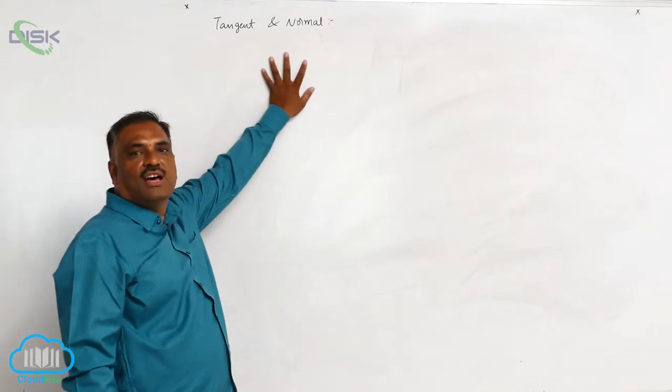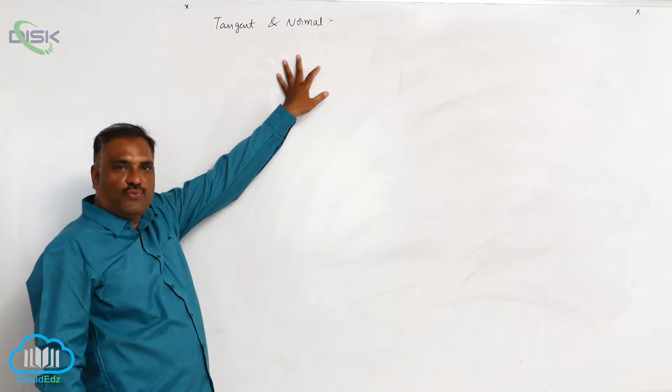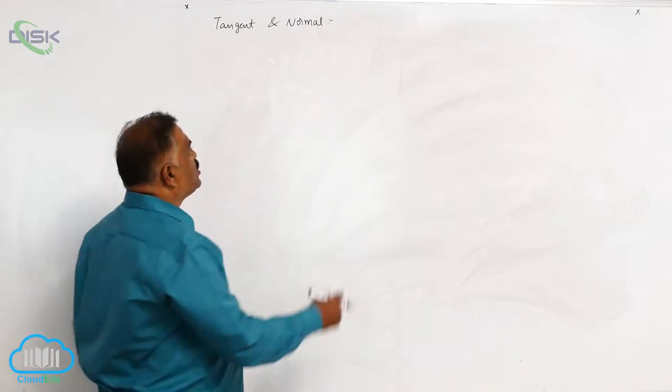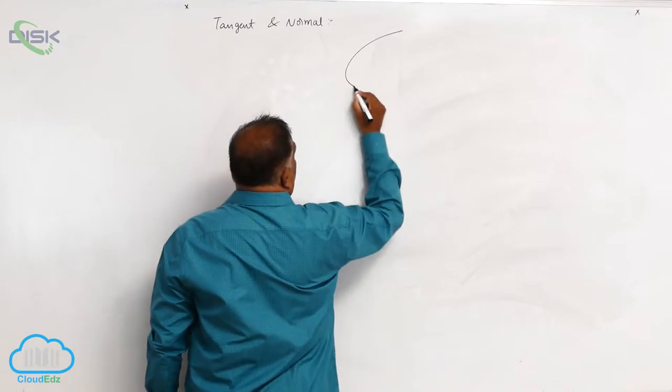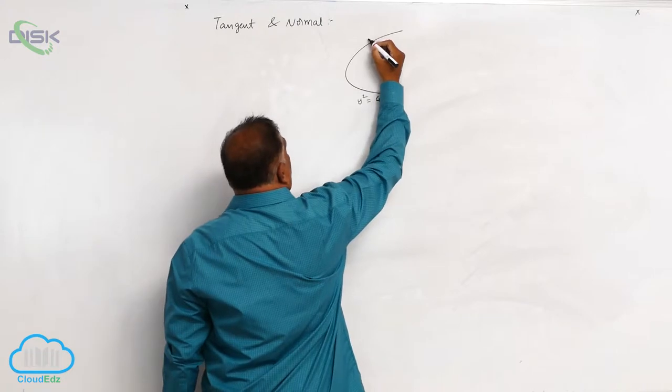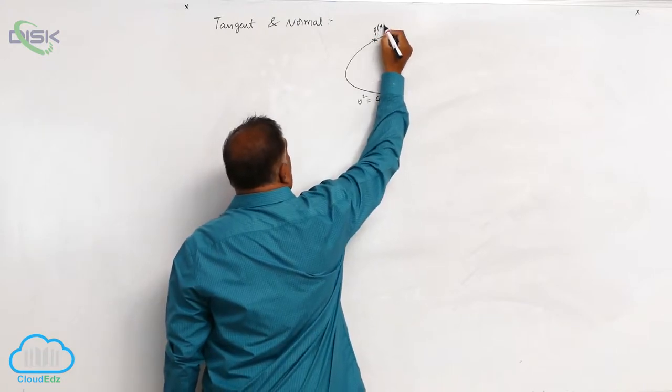We will discuss the tangent and normal to the parabola y square equal to 4ax at a particular point x1, y1. Let us consider the parabola is y square equal to 4ax and this is point P x1, y1.